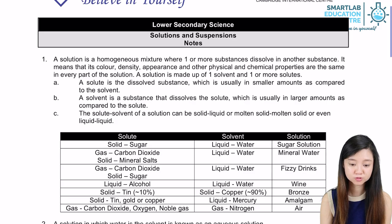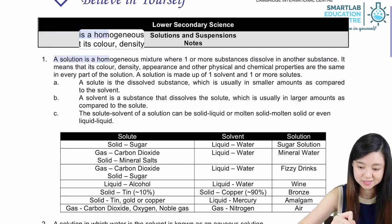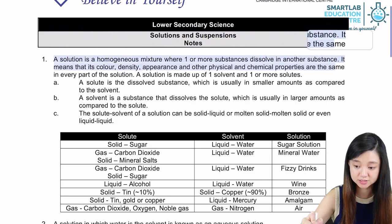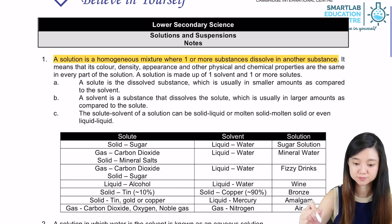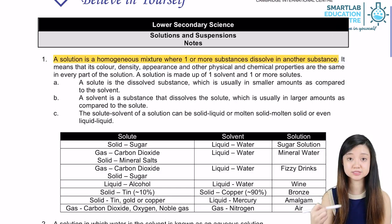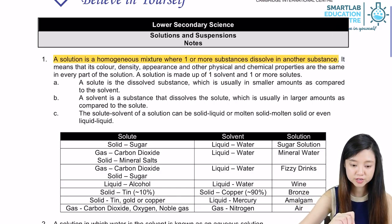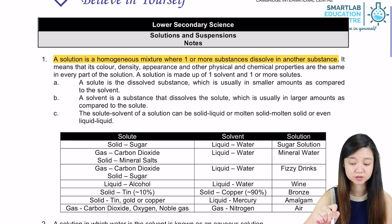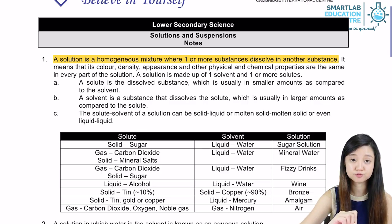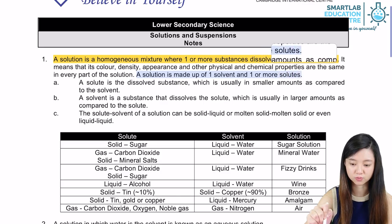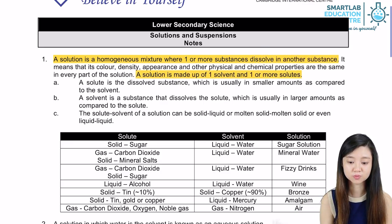A solution is a homogeneous mixture where one or more substances dissolve in another substance. Because it's homogeneous, it means the same — so every color, density, appearance, and other physical and chemical properties are actually the same in every part of the solution. A solution is made up of one solvent and one or more solutes.